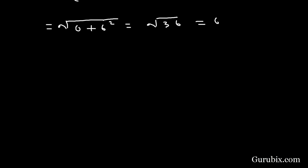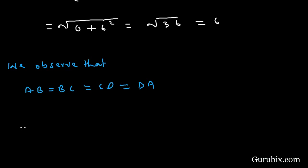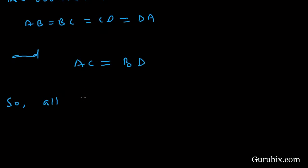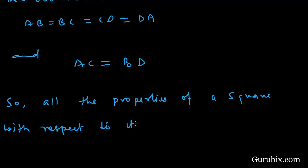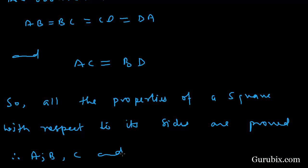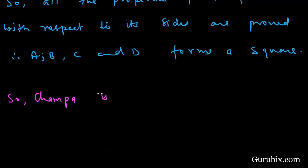We conclude that AB = BC = CD = DA = 3√2, and AC = BD = 6. All the properties of a square with respect to its sides and diagonals are proved. Therefore, points A, B, C and D form a square, so Champa is correct. This is the solution of the question. Thank you.